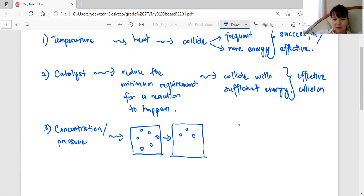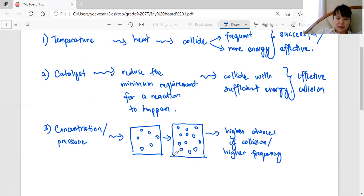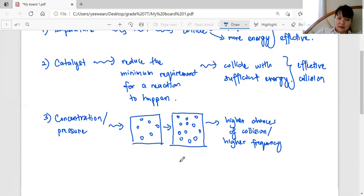So I increase it to double, one, two, three, four, five, six to one, two, three... twelve. So they got nowhere to go but to bump into each other. So higher chances of collision or higher frequency of collision. So ultimately it will increase the rate of reaction if it increase the concentration of the reactants.